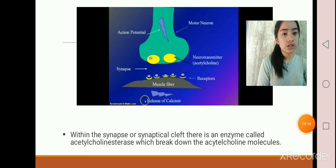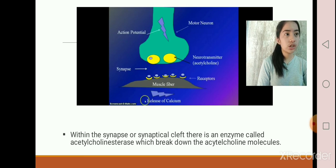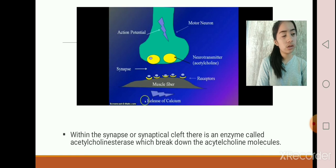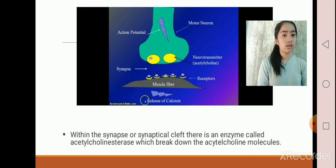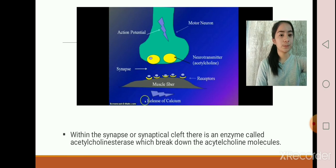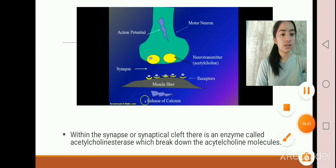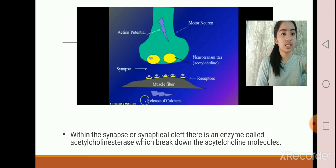As an additional note on acetylcholinesterase: this enzymatic breakdown ensures that one action potential in the neuron yields only one action potential in the skeletal muscle fibers of the motor unit, and only one contraction of each muscle fiber. And that is how it ends — the nerve supply and muscle fiber stimulation.